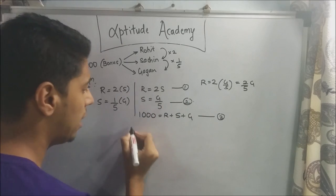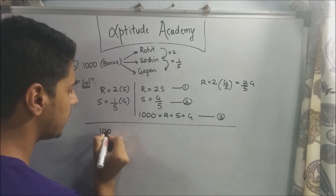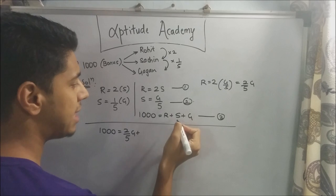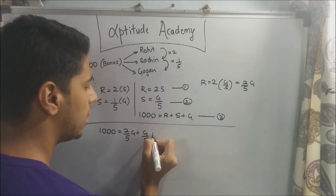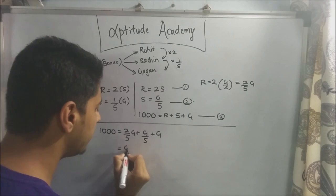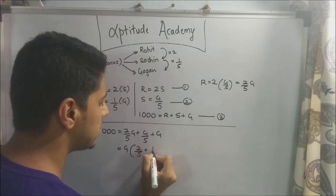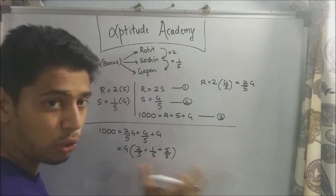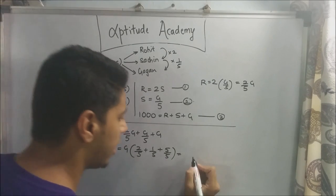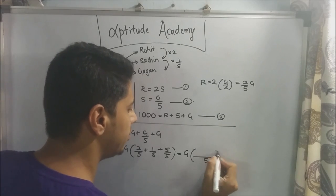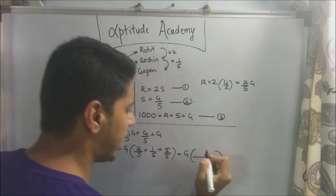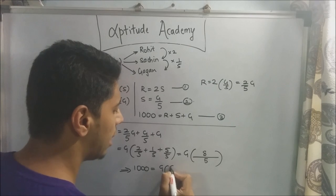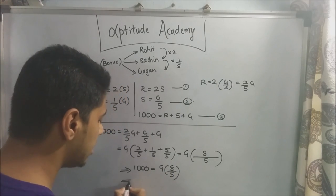Substituting into equation three: 1,000 = 2g/5 + g/5 + g. Taking g as common: 1,000 = g × (2/5 + 1/5 + 5/5) = g × (8/5). So 1,000 = 8g/5.